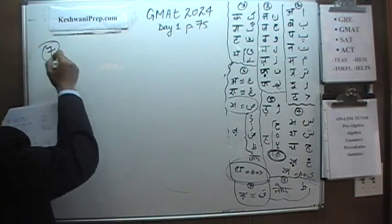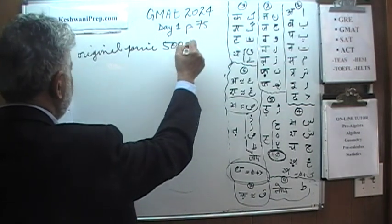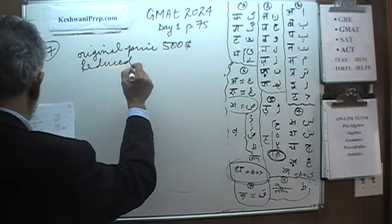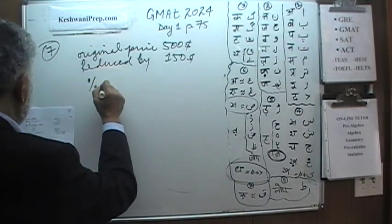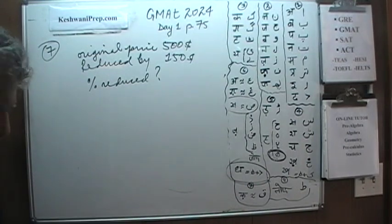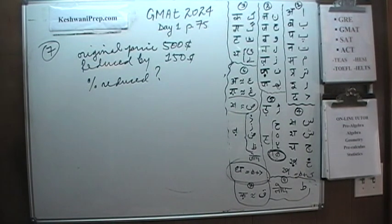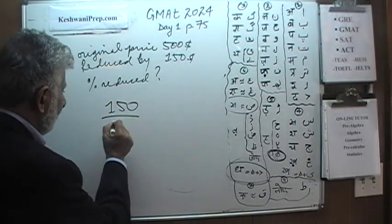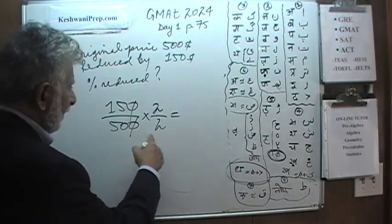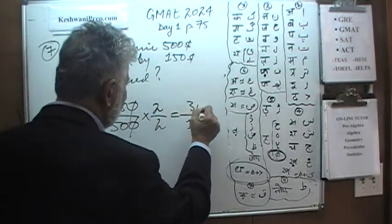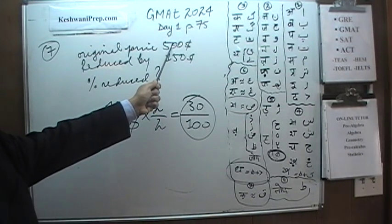Number 7. We are told the original price is $500 and the price was reduced by $150. The question simply is: by what percentage was the price reduced? They want to know what percentage $150 is of $500. That's 150 out of 500 — knock off a zero from top and bottom to get 15 over 50, then multiply top and bottom by 2: 30 over 100, which is 30%. Of course it's 30% — 10% of $500 is $50, so $150 must be 30%.